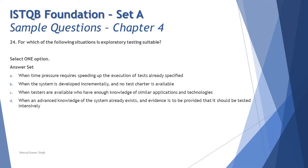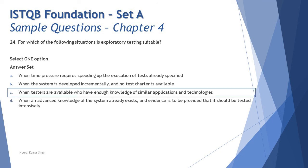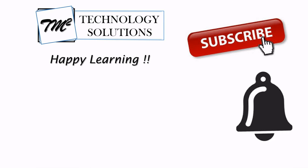Putting it all together, the right answer here is C: when testers are available who have enough knowledge of similar applications and technology, which fulfills the criteria to apply exploratory testing. That's all from this tutorial. I hope you got a good understanding of these sample questions. We'll be back with more sample questions from chapter four, so stay tuned. Feel free to comment below — I'm always there to address your queries. Till then, keep learning, keep exploring, happy learning!